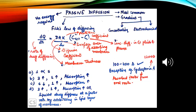Passive diffusion is based on Fick's law of diffusion. Fick's law states that dQ/dT = DAK/H × (CGIT − C), where dQ/dT is the rate of diffusion, D is the diffusion coefficient, A is the surface area of the absorbing membrane, K is the partition coefficient, H is the membrane thickness, and (CGIT − C) is the concentration difference in GIT fluids and plasma.